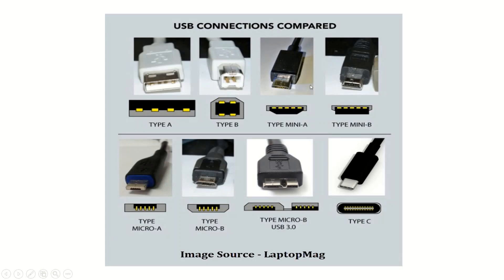The Mini USB connectors — as the name suggests — are a smaller connection type suited for mobile devices. They have been largely superseded by Micro USB, but you'll still find them on some cameras, MP3 players, game controllers, and similar devices. Mini USB Type A was discontinued altogether due to various technical issues and was replaced by Mini USB Type B. We would still see Mini USB Type B connectors on older mobile phones, but it has been drastically phased out as well.